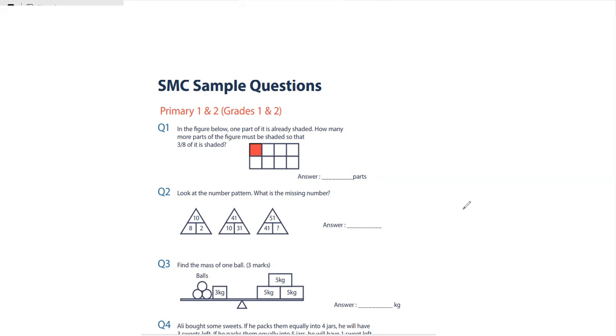Let's start with question number one. In the figure below, one part of it is already shaded. How many more parts of the figure must be shaded so that three eighths of it is shaded? This rectangle is divided into eight parts and three eighths means three parts should be shaded. One part is already shaded, so two more parts need to be shaded. My answer is two for question number one.